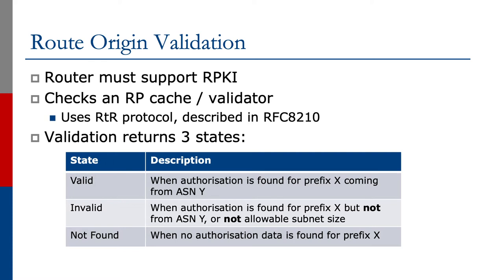Validation returns three states. Valid means when authorization is found for prefix X coming from AS Y. Invalid is when authorization is found for prefix X but not from AS Y, or not the allowable subnet size. Not found is when no authorization data is found for prefix X.